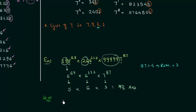Now for the homework problem: find the unit digit of 55 raised to power 66, multiplied by 66 raised to power 55, multiplied by 77 raised to power 65. Once you have your answer, post it in the comment section. This is all for this presentation — see you in the next one.